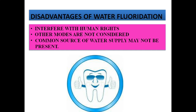On the other side, there are disadvantages. One is the ethical issue: once community water supply is fluoridated, all people in that community are bound to drink that water with no choice of rejection, so human rights — specifically the right to reject — is violated. Another disadvantage is that if there is no common centralized water supply, this method is not possible.